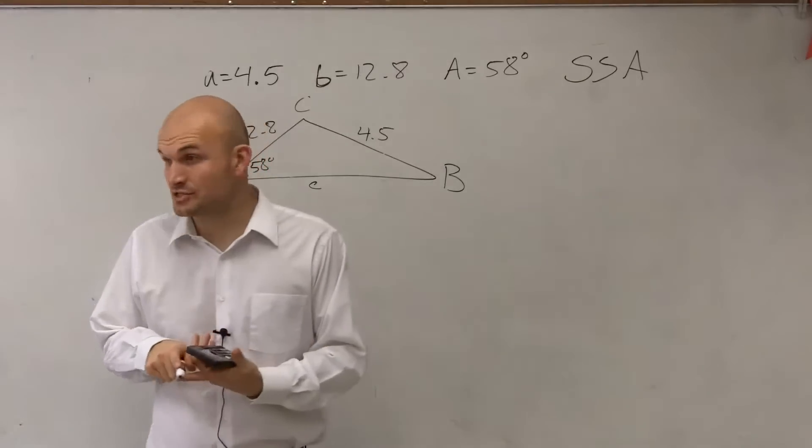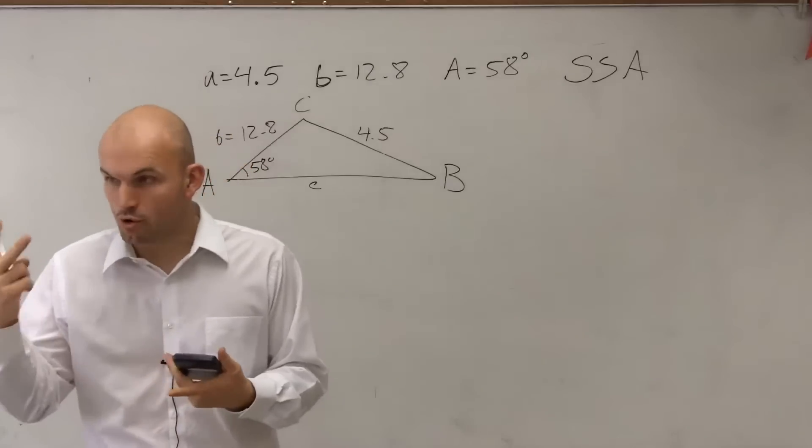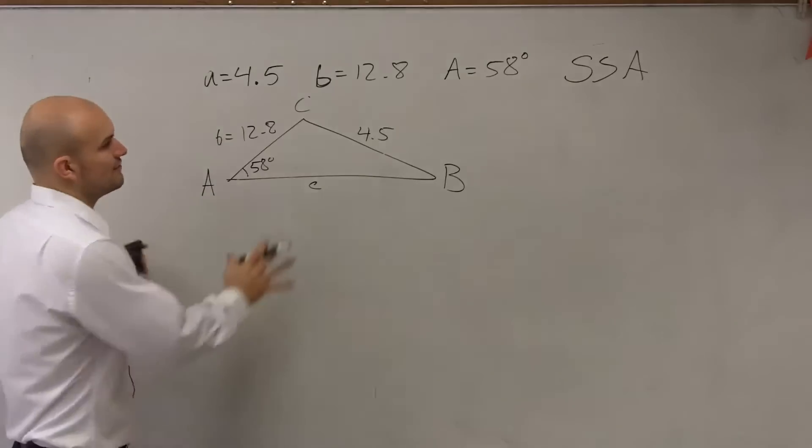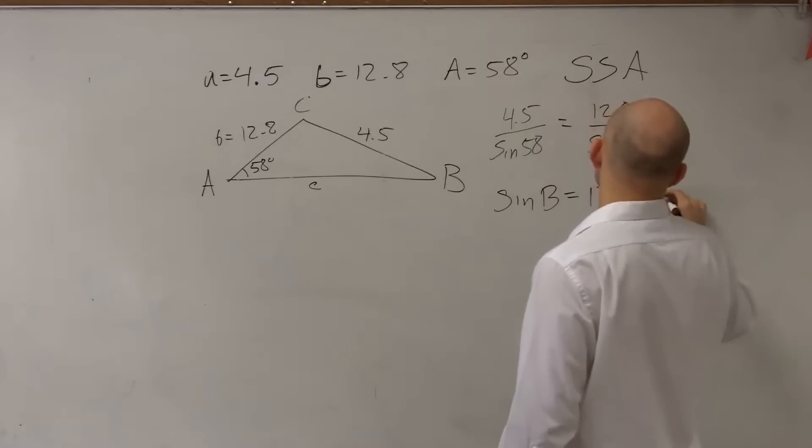So what we could have is we could have answers like you did on the homework where there's one single solution. We can also have now an opportunity where there's no solution or two triangles. So on the first one, what we look at is we need to create the law of sines. So I'm going to have 4.5 over the sine of 58 equals 12.8 divided by the sine of B. I don't need to worry about C right now because I don't have a C in here.